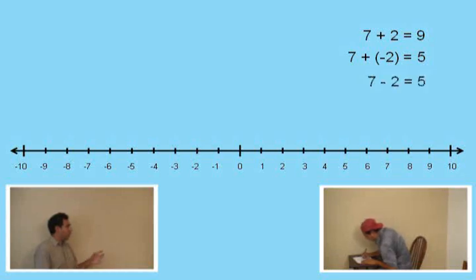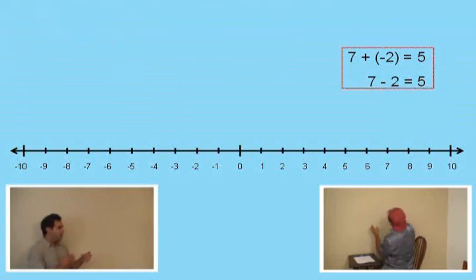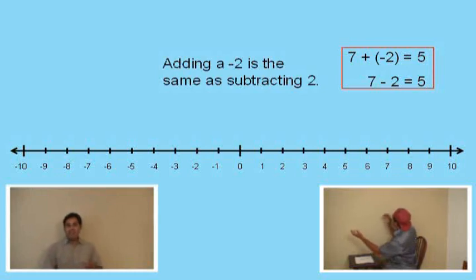So let's go ahead and write down this subtraction problem. Seven subtract two. There it is there. Now, we notice that seven plus a negative two is five and also seven subtract two is five. So, Charlie, what can you say about these two equations here? Go ahead and tell me what you're seeing with those two equations there. Well, if you add a negative two and negative two minus seven minus... Okay, class, let me translate for Charlie. Charlie just said adding a negative two is the same as subtracting two. That's what I meant. Yeah, we know, Charlie. That's what you meant.